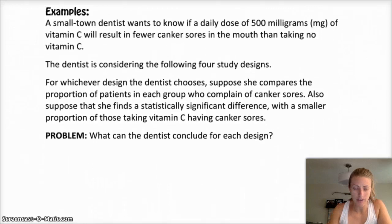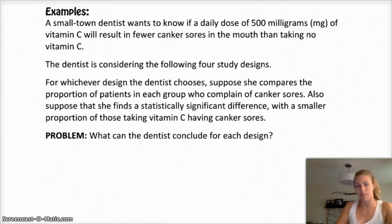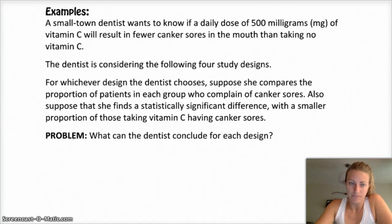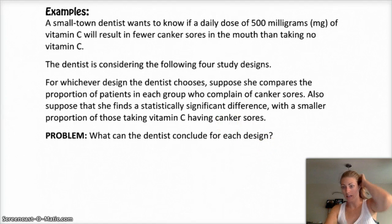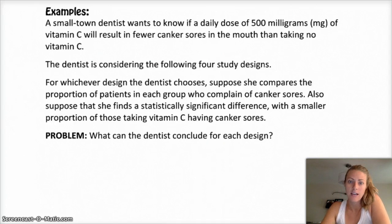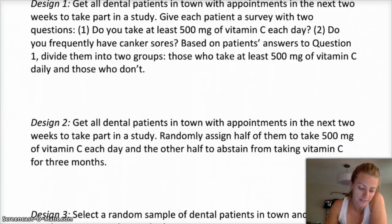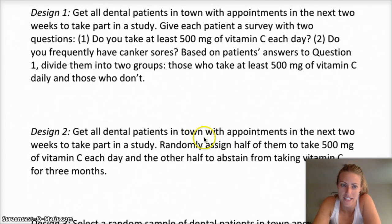We have a couple of different examples. The first one is a long example about a dentist who wants to know if a daily dose of vitamin C will result in fewer canker sores than no vitamin C. They are considering four study designs. What you should do is read through the different study designs and determine the scope of each — what are you allowed to conclude from each of the different designs? Here are design one and design two. Go ahead and take a look at those, read them, and determine what you're allowed to conclude.